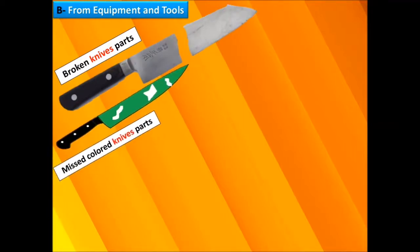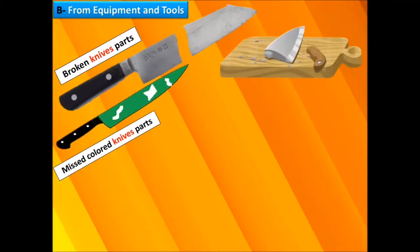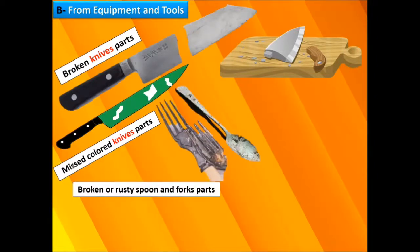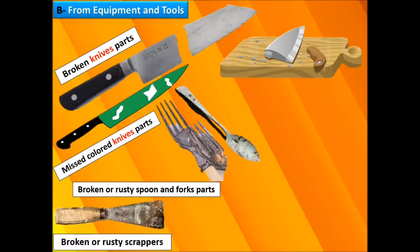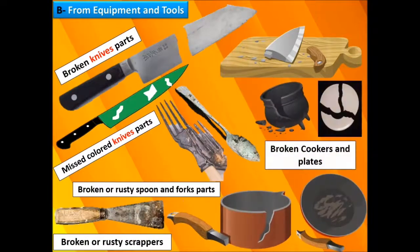Physical hazards from equipment and tools include broken or rusty spoons and forks, broken or rusty scrapers, and broken cookers and plates.